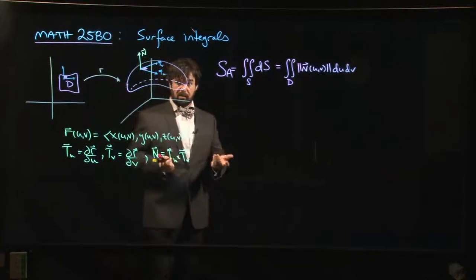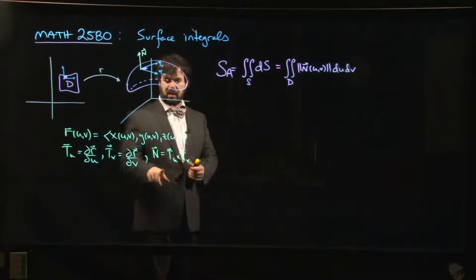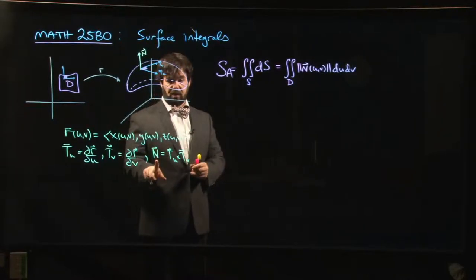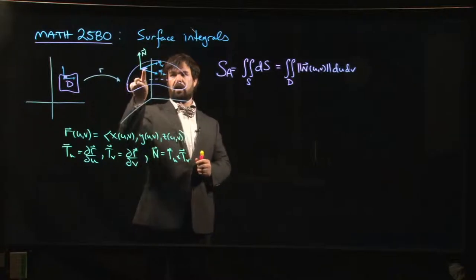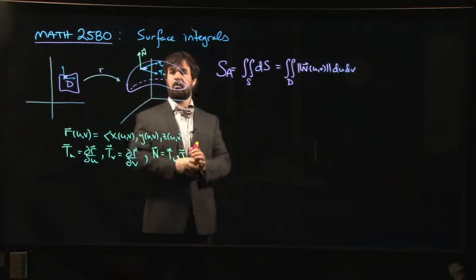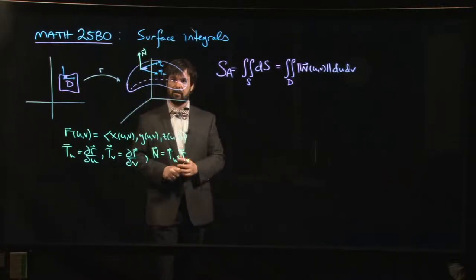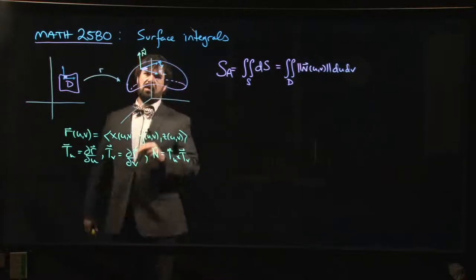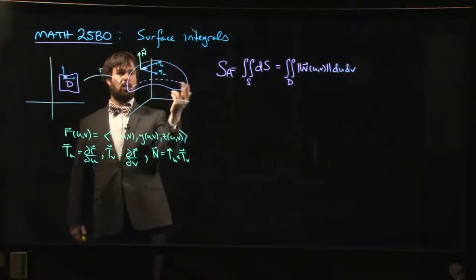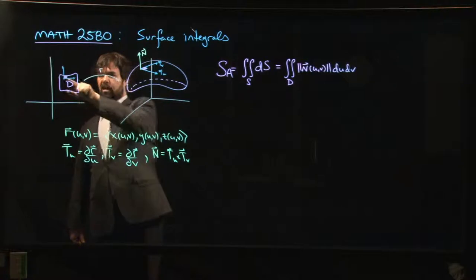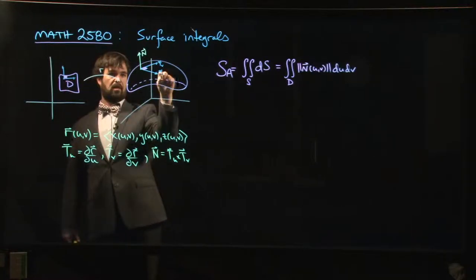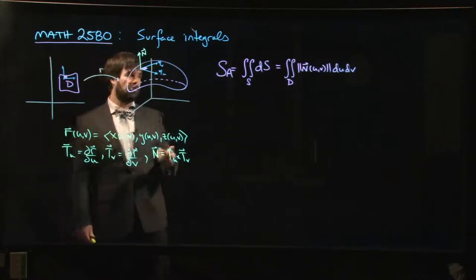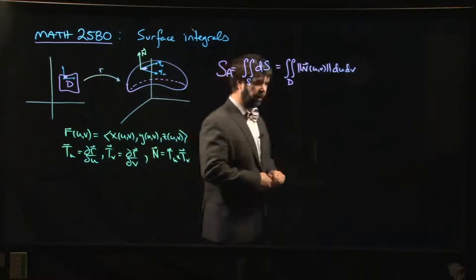And we know basically from linear algebra that this normal vector is going to give you that scale factor. Because the area of a parallelogram is simply the cross-product of two magnitudes that span that parallelogram. The t sub u, t sub v, they might be too long, but you're multiplying by a delta u and a delta v over here, and that shrinks them down to the appropriate size. So you can make sense of this.